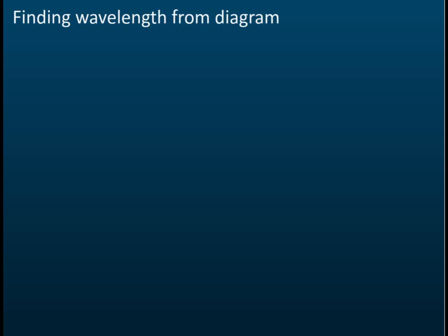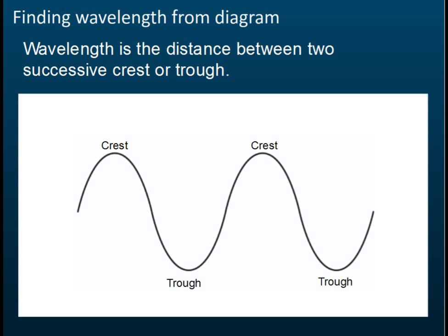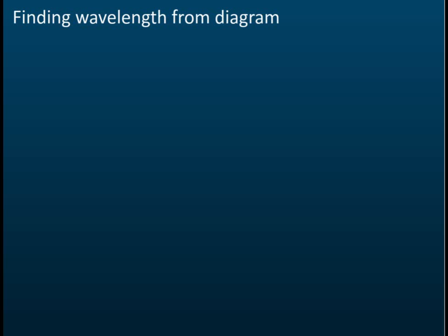The first case: wavelength is the distance between two successive crests or troughs. This is for a transverse wave. So for a transverse wave, we have crests and we have troughs, and the wavelength is the distance between crests or the distance between troughs.